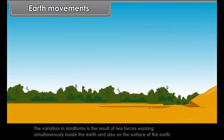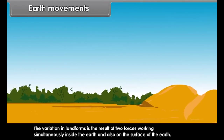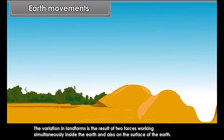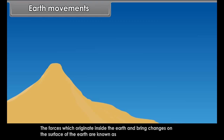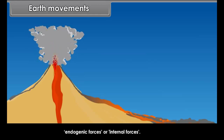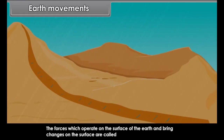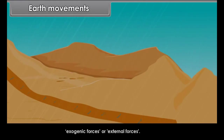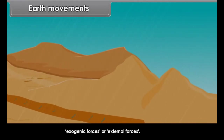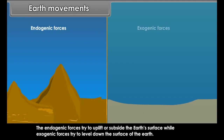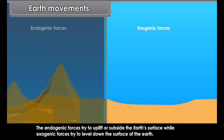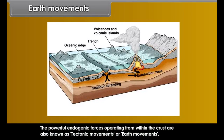The variation in landforms is the result of two forces working simultaneously inside the earth and also on the surface of the earth. The forces which originate inside the earth and bring changes on the surface are known as endogenic forces or internal forces. The forces which operate on the surface of the earth and bring changes are called exogenic forces or external forces. The endogenic forces try to uplift or subside the earth's surface while exogenic forces try to level down the surface. The powerful endogenic forces operating from within the crust are also known as tectonic movements or earth movements.